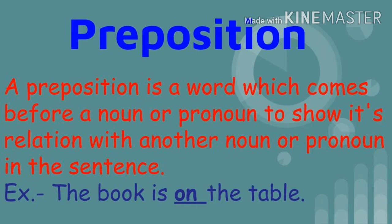The next one is preposition. A preposition is a word which comes before a noun or pronoun to show its relation with another noun or pronoun in the sentence. For example: 'The book is on the table.' Here, 'on' is the preposition. It came before the word 'table,' which is a noun, and 'on' shows the relation between 'book' and 'table.' So this is a preposition.